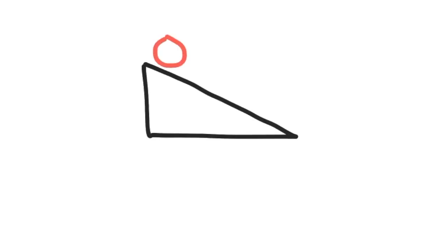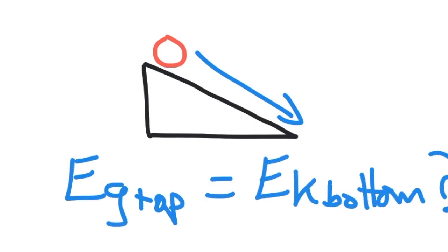When we roll the ball down a ramp, we expect the potential energy at the top to be equal to the kinetic energy at the bottom. Does that happen in this system? No way. Where does the missing energy go?